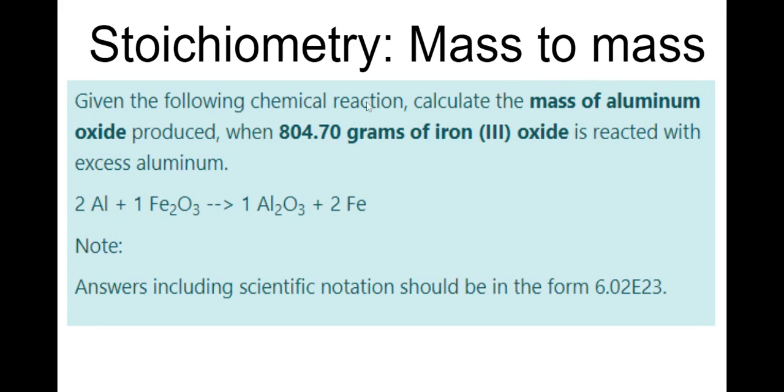As you can read, given the following chemical reaction, calculate the mass of aluminum oxide produced when 804.7 grams of iron(III) oxide is reacted with excess aluminum. We haven't talked about this much, but excess aluminum just means you're not going to have to worry about it. So what you want to key in on is this 804.70 grams of iron(III) oxide and the mass of aluminum oxide you're calculating.